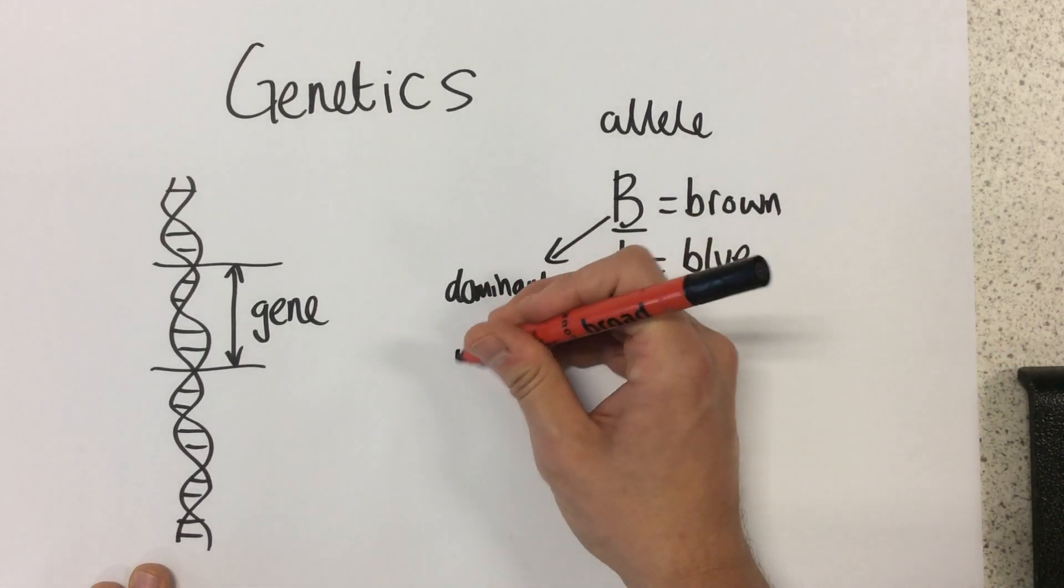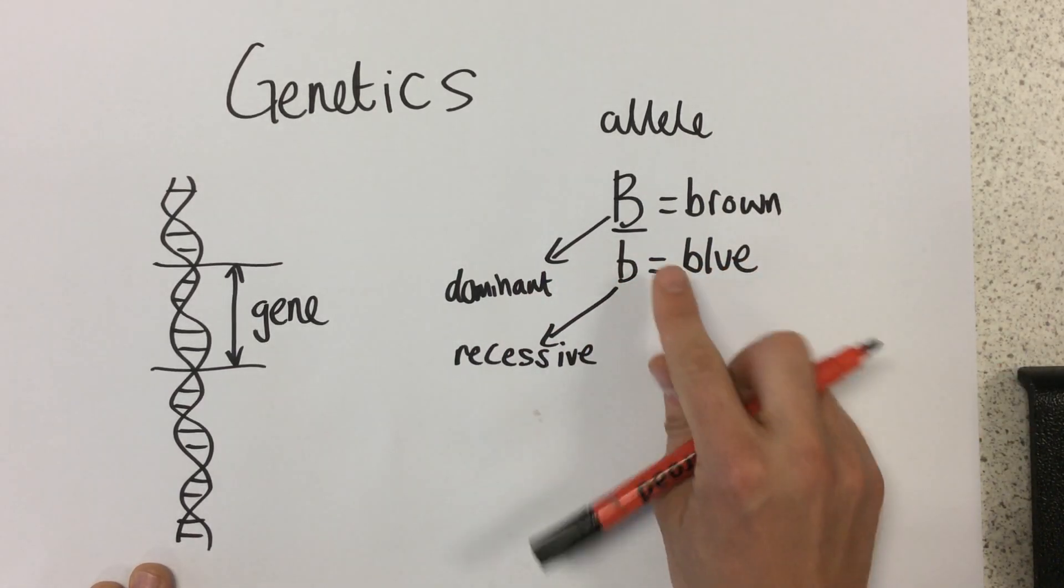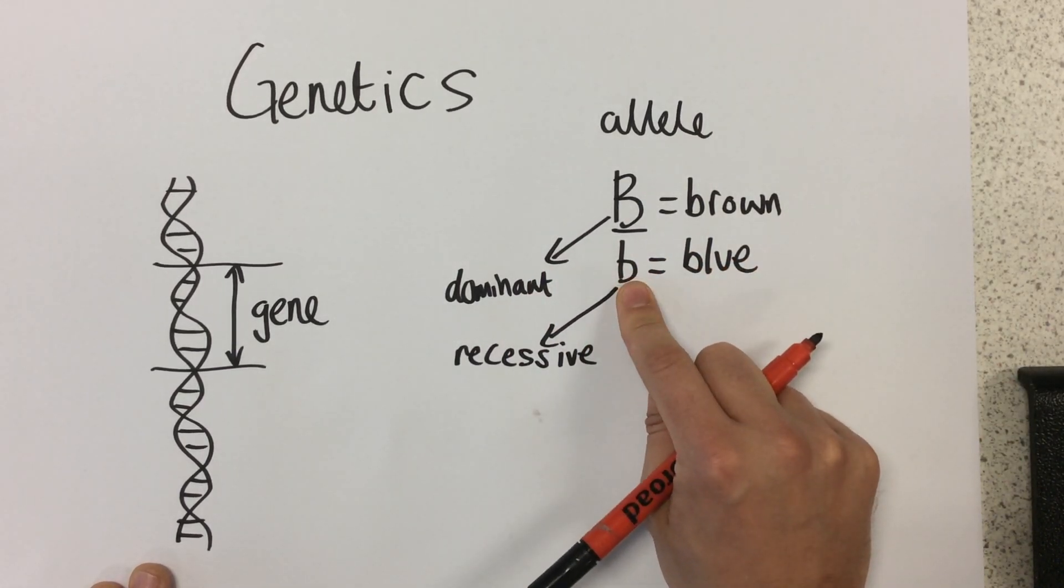If it's lowercase, this shows that it's recessive. This means that we need two of this allele for this to be expressed in the phenotype.